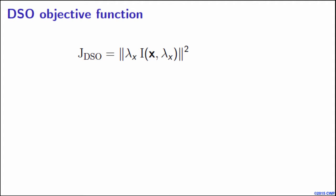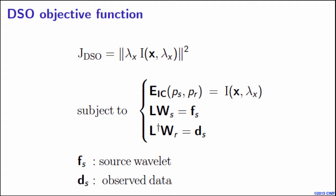The DSO objective function is subject to a number of physical constraints. First, the image is given as I mentioned before, by cross-correlation between P components of source and receiver wavefields. Here I denote it by EIC, which stands for Extended Imaging Condition. Source and receiver wavefields come from forward and adjoint propagation of the source wavelet and recorded data, respectively.